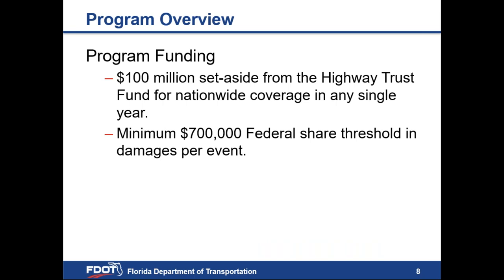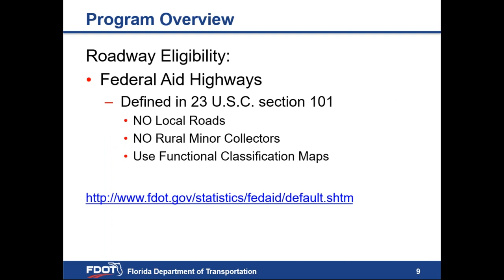Each year, there is a $100 million set aside from the Highway Trust Fund for nationwide coverage. In order for emergency relief funding to be requested, there must be a minimum of $700,000 in damages caused by the event. The FHWA ER program provides disaster assistance for federal-aid highways. Local roads and rural minor collectors would fall under FEMA.